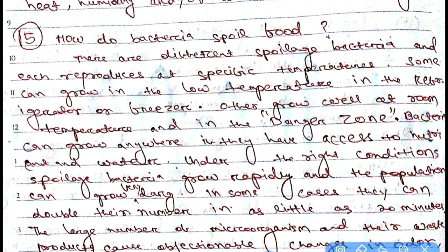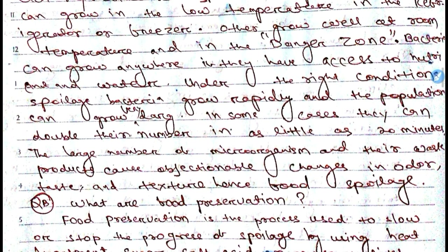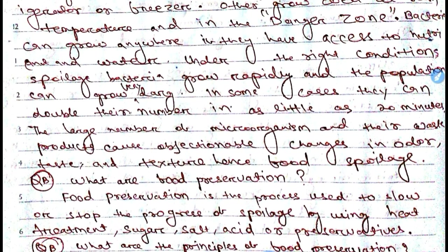In some cases, bacteria can double their number in as little as 20 minutes. As the population grows, there will be waste generation, which causes objectionable changes in smell, taste, and texture. Hence, food will be spoiled. If bacteria grow, there will be negative changes in the food.